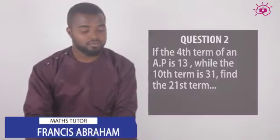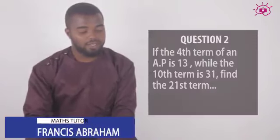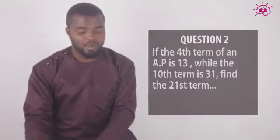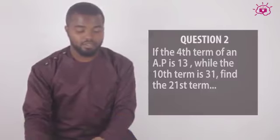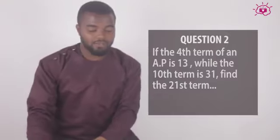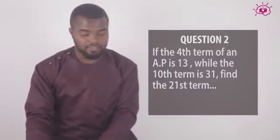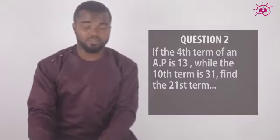The second question: the fourth term of an AP is 13 while the 10th term is 31. We're asked to find the 21st term. This is quite easy - we will solve it simultaneously.